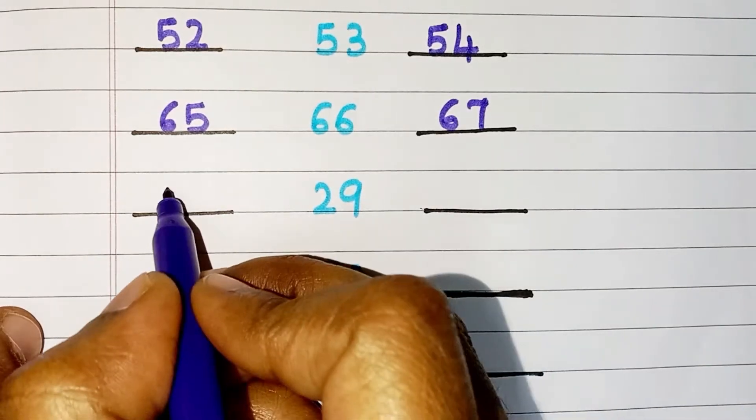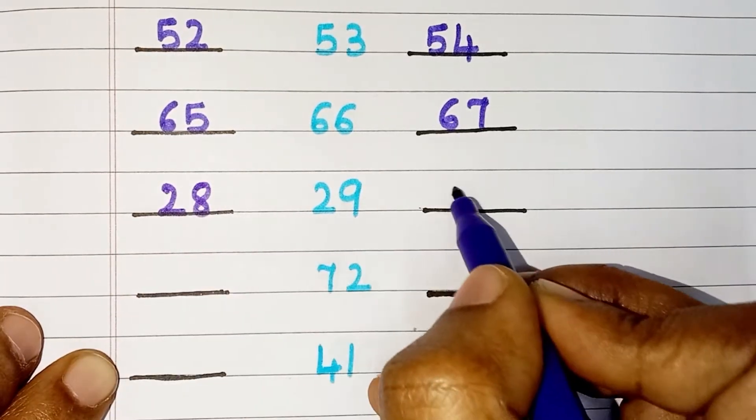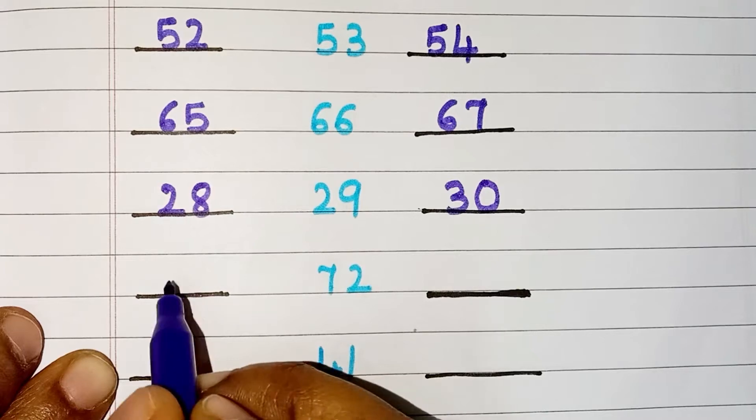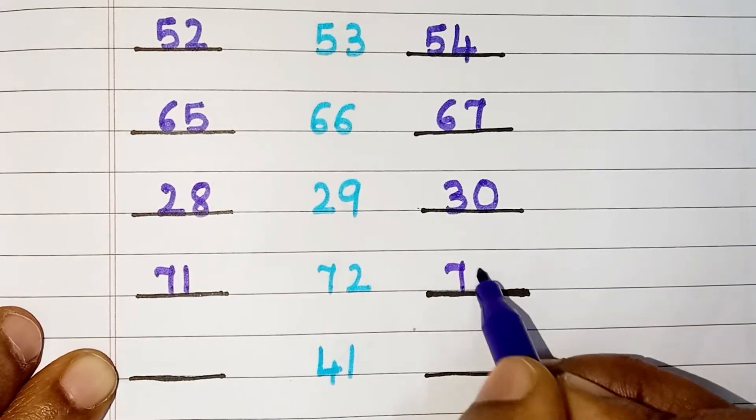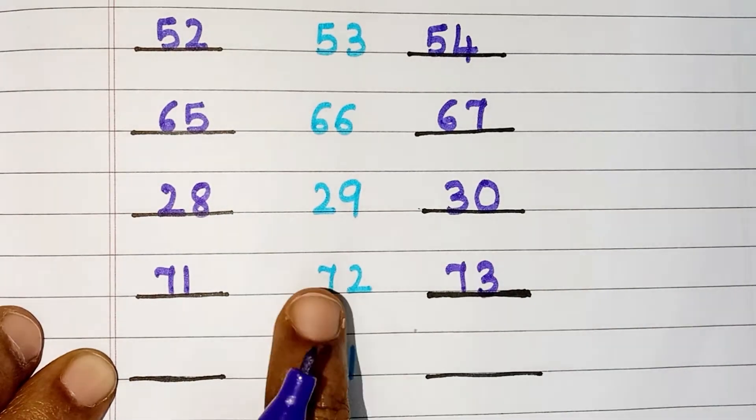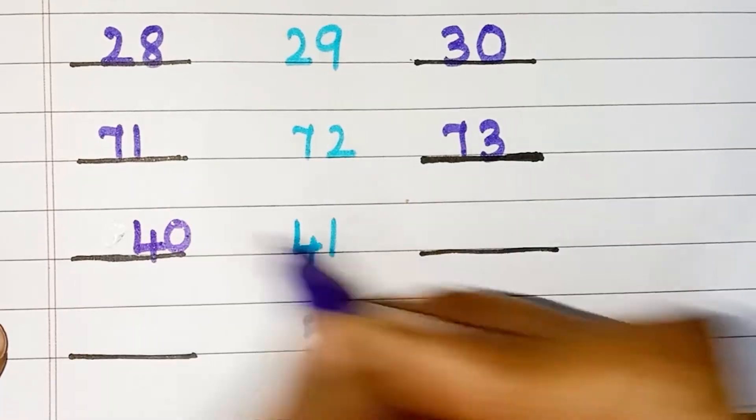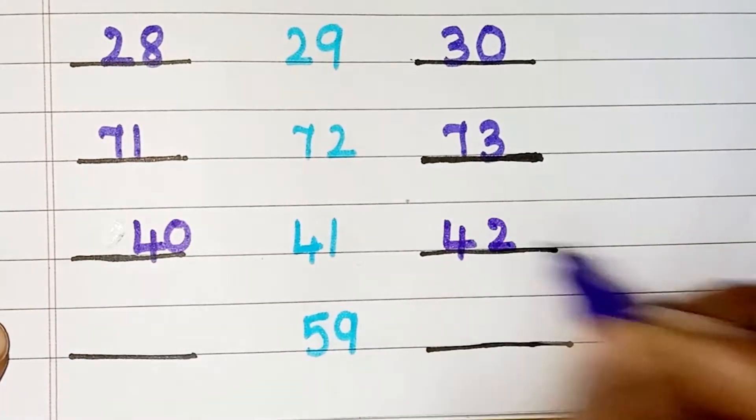Before 29, 28. After 29, 30. Before 72, 71. After 72, 73. Before 41, 40. After 41, 42.